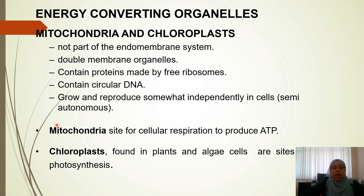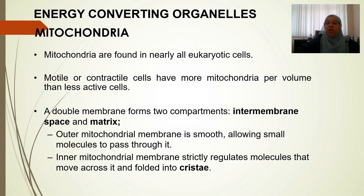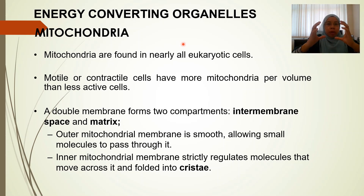Chloroplasts are found in plant cells and algae as the site for photosynthesis. Mitochondria are found in nearly all eukaryotic cells, including plants, animals, and fungi. Some cells have a single large mitochondrion, but some have hundreds or even thousands of mitochondria.